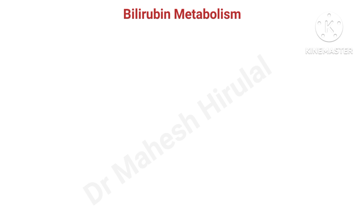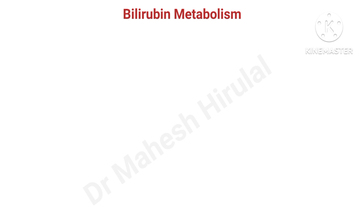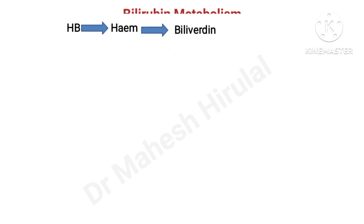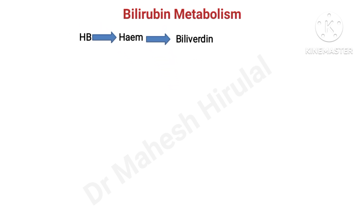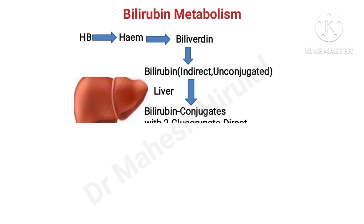Before discussing LFT in detail, there is a need to discuss bilirubin metabolism. When RBCs are destroyed, hemoglobin is converted into heme. The heme is then converted into biliverdin. Biliverdin is converted into bilirubin, which is called indirect bilirubin or unconjugated bilirubin. This unconjugated bilirubin enters the liver cells, where it gets conjugated with 2-glucuronate, and is then called conjugated bilirubin or direct bilirubin.